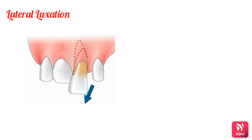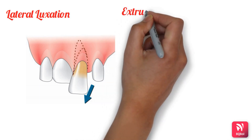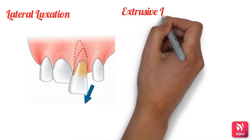Circular bleeding is present, indicating rupture of the periodontal ligament fibers. The tooth is sensitive to percussion, and the crown of the laterally luxated tooth is usually displaced horizontally with the tooth locked firmly in the new position.